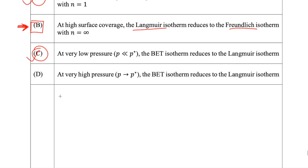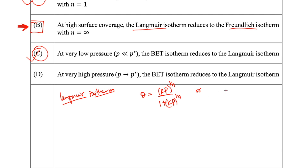First, let us write down the Langmuir isotherm. According to the Langmuir isotherm, we have θ = KP/(1 + KP). If dissociation or association is occurring, you also have a power of 1/N, but let us keep it simple and not assume dissociation or association is happening — just a general Langmuir isotherm. Note that the N in Langmuir refers to the number of particles it dissociates or associates into, which is different from the N in the Freundlich isotherm.